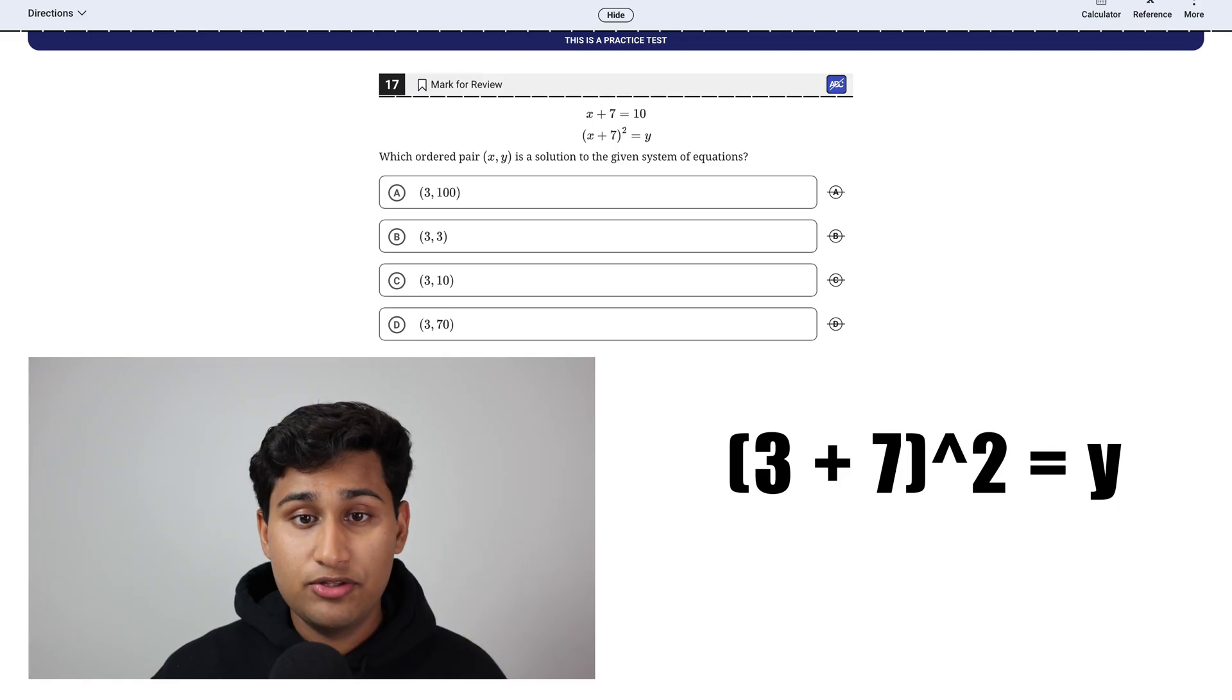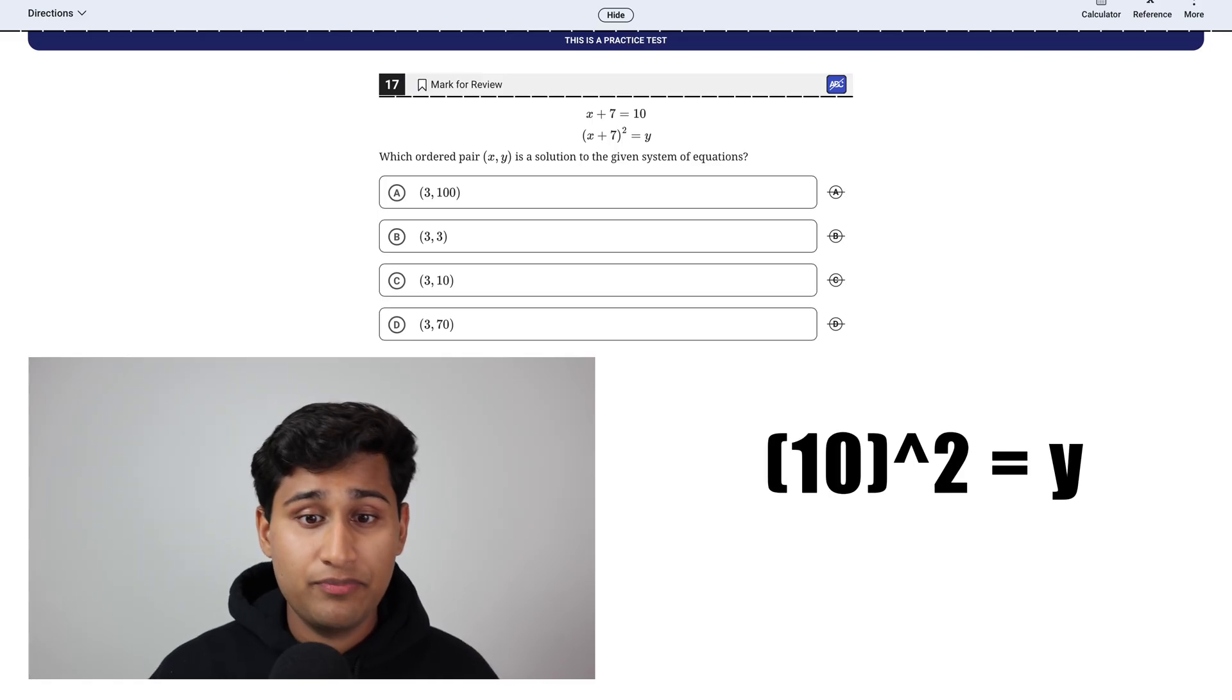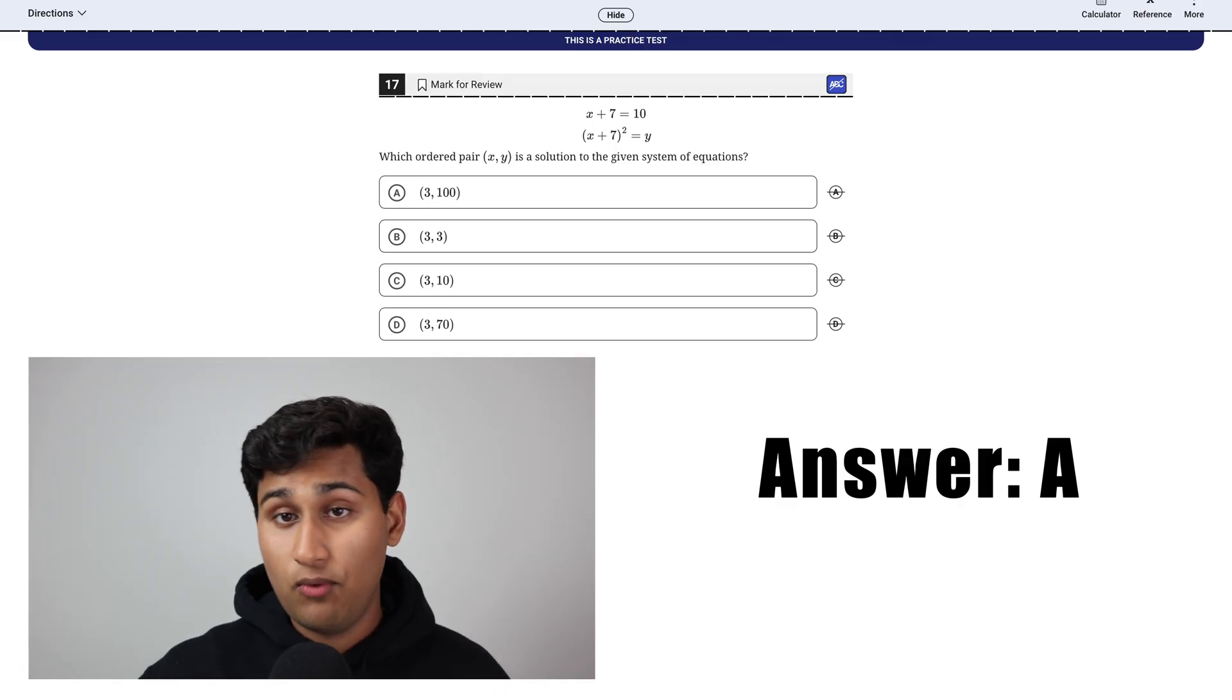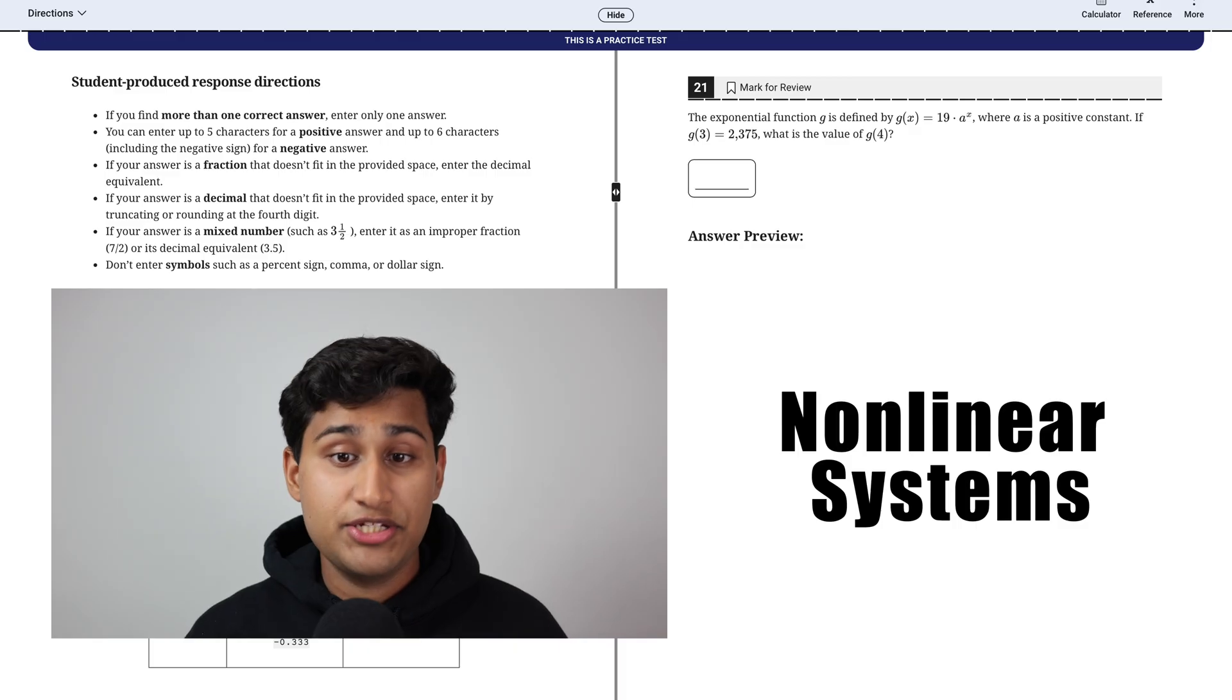Then you want to put that three into the next equation. So you want to do Y equals three plus seven, which is 10 squared, which equals a hundred. So then your answer is A because X is three and Y is a hundred. So three comma 100 is your answer.